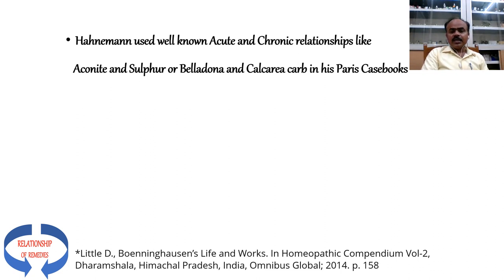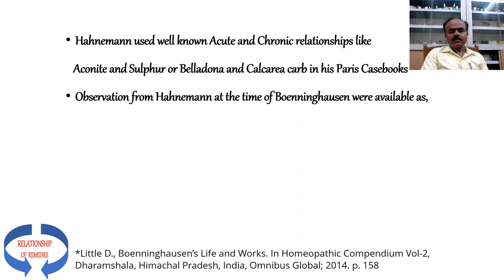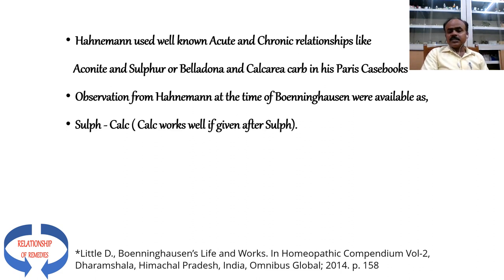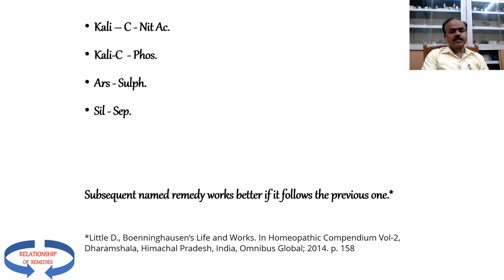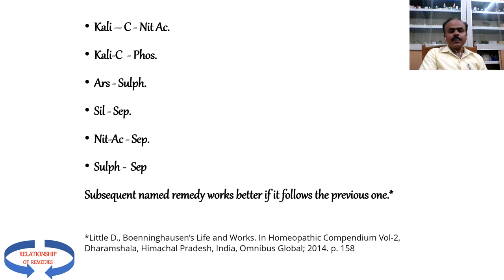Unfortunately, it is the least understood and least used because of neglect on the part of physicians. We can find Hahnemann using the relationship of remedies with respect to acute and chronic relationships like Aconite and Sulphur, or Belladonna and Calcarea Carb in his Paris casebooks. Observations from Hahnemann at the time of Boenninghausen showed that Calcarea Carb works well if given after Sulphur; Phosphorus works better after Calcarea; Sulphur works better after Arsenic.